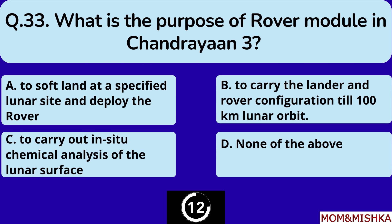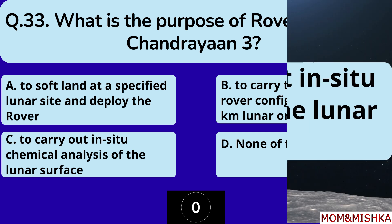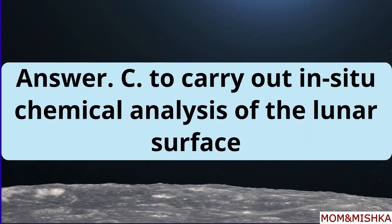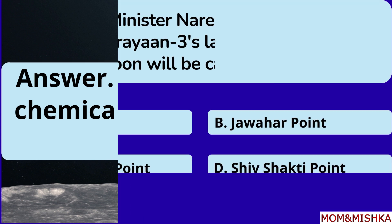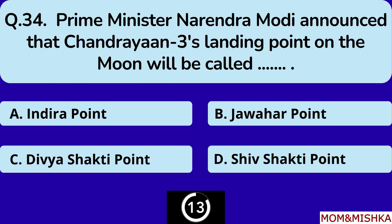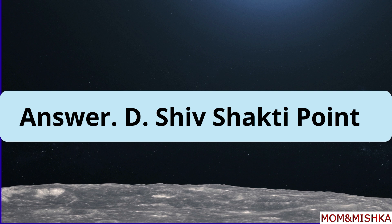What is the purpose of the rover module in Chandrayaan-3? To carry out in-situ chemical analysis of the lunar surface, option C. Prime Minister Narendra Modi announced that Chandrayaan-3's landing point on the moon will be called Shiv Shakti Point, option D.